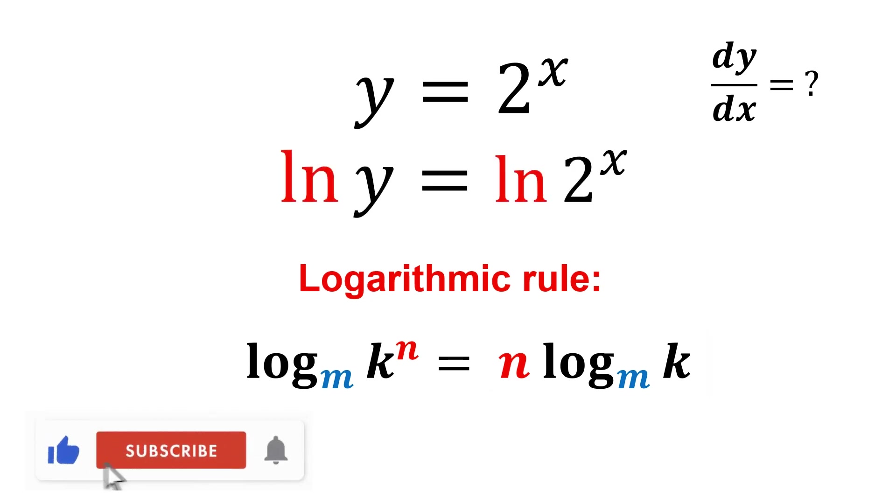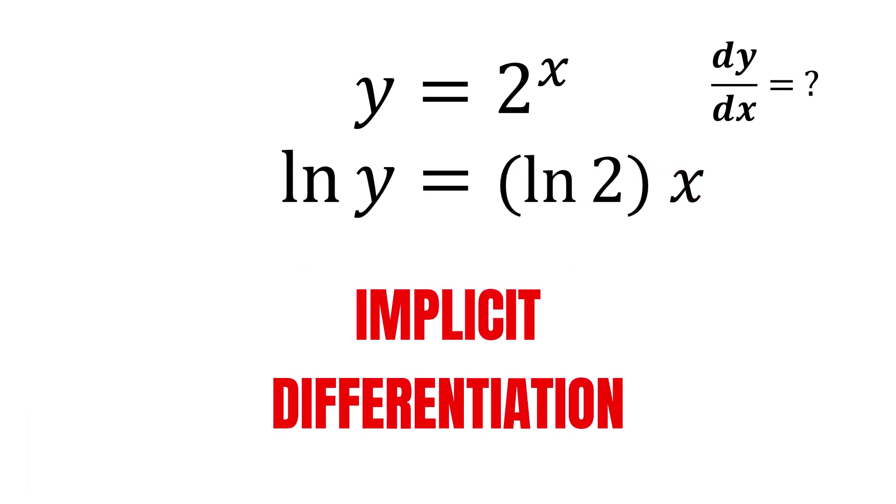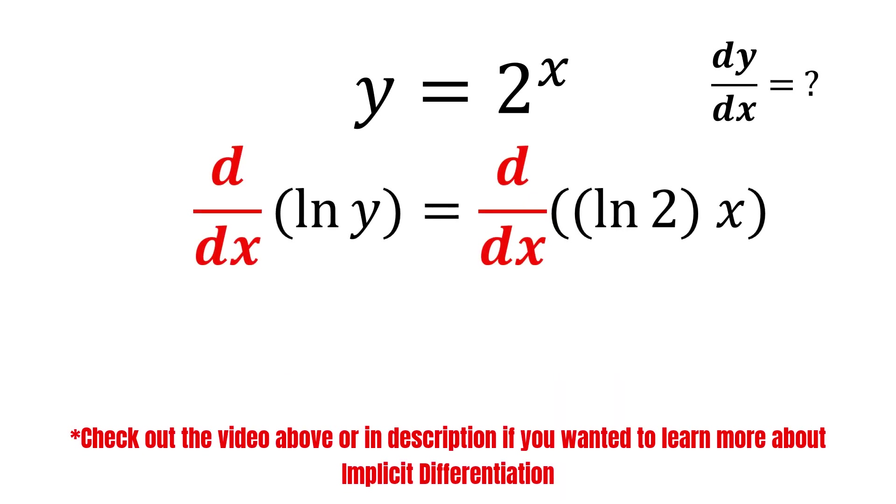Therefore, we take the natural log on both sides so that we can bring the x down. Now, we take the derivative of this equation by applying implicit differentiation. We take the derivative on both sides.